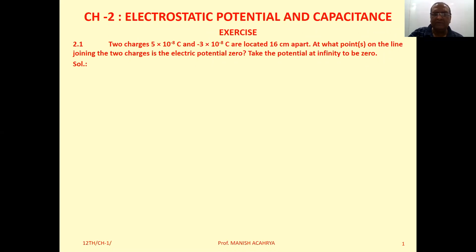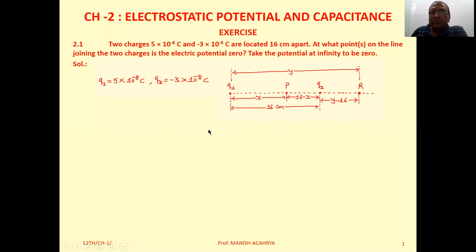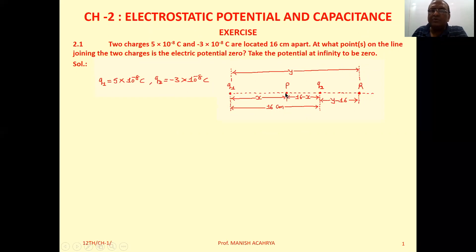Two charges are given: Q1 = 5×10⁻⁸ coulomb and Q2 = -3×10⁻⁸ coulomb, separated by 16 cm. Suppose one point P is between these two charges at a distance x cm from charge Q1. So from charge Q2 it will be at (16 - x) cm, where the resultant potential becomes zero.